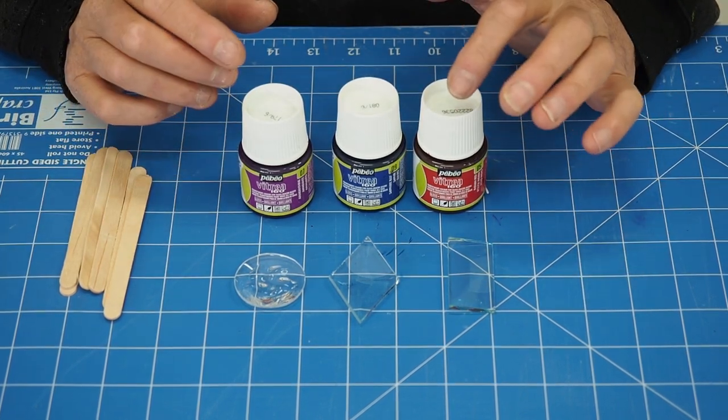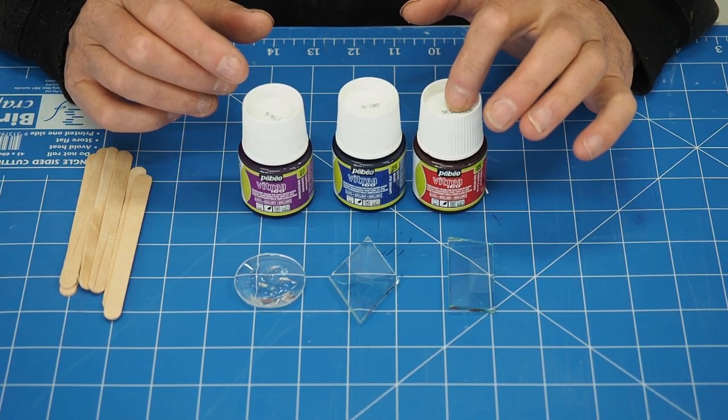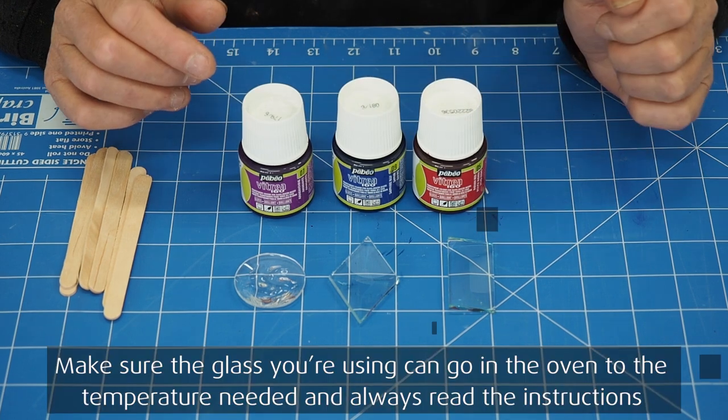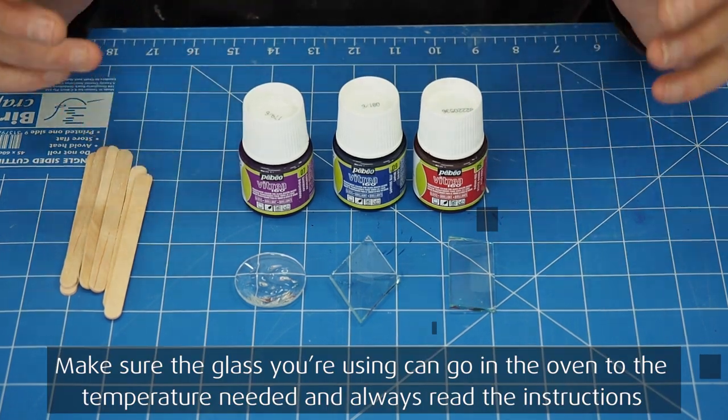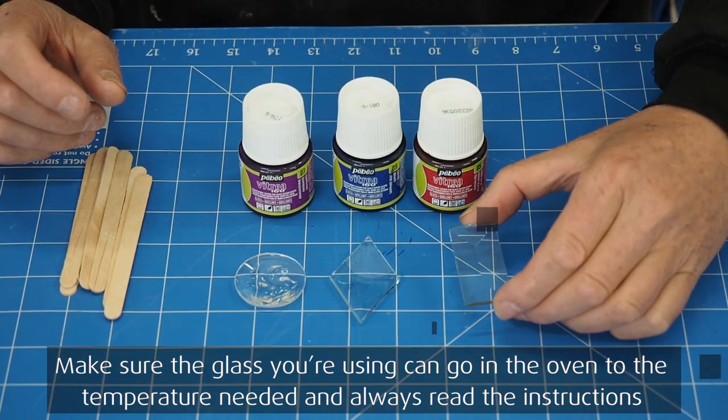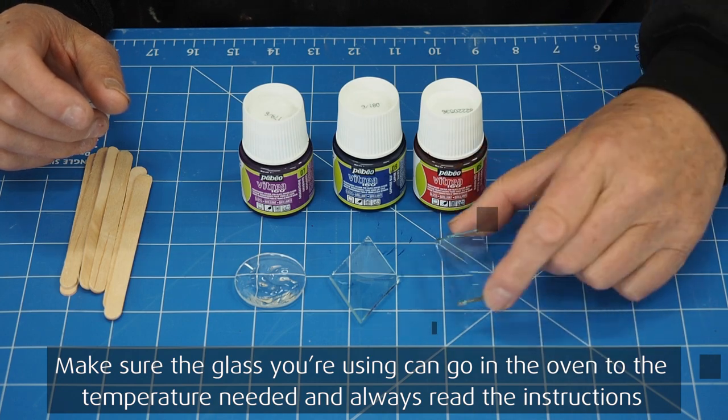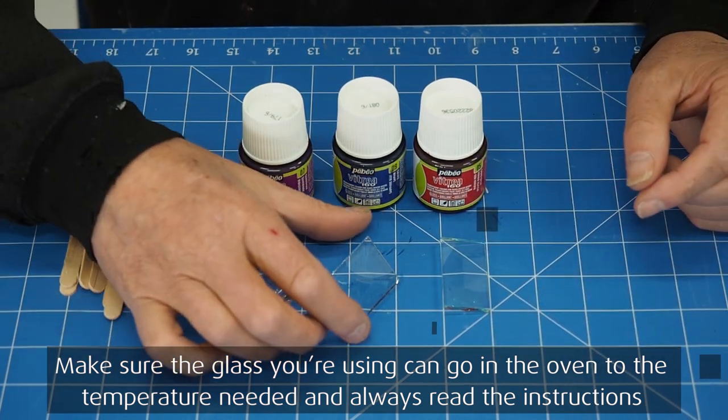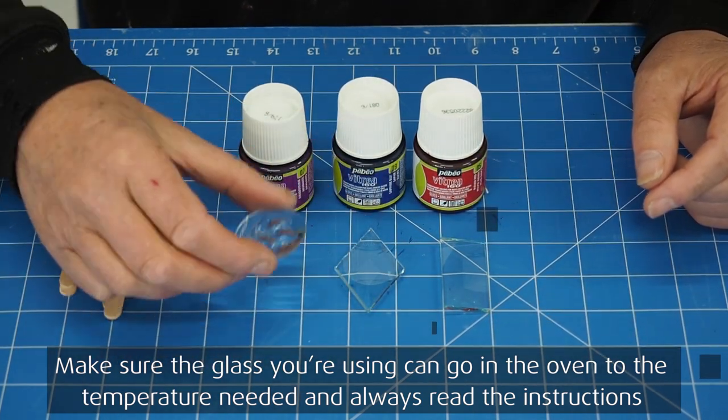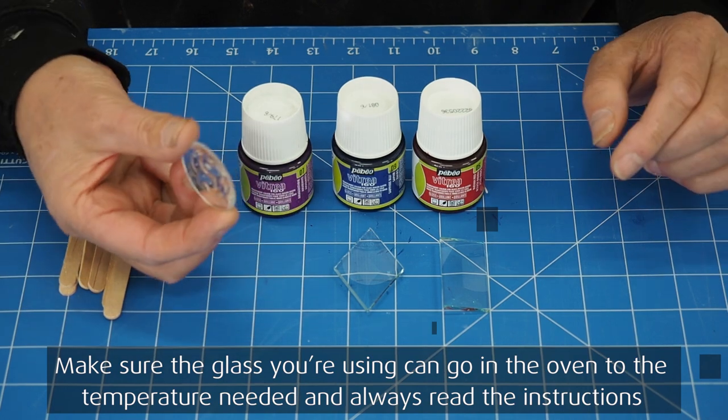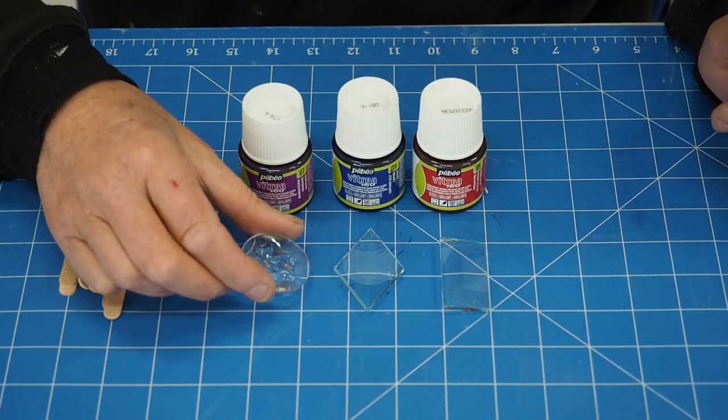Okay, I've got everything ready. I've got my Pebeo Vitra 160 paints for painting onto glass surfaces and I'm going to be painting onto these bevels. I've got a rectangular here, I've got a diamond one here, and I've also got a round one here which has got texture on the other side which will be quite good.